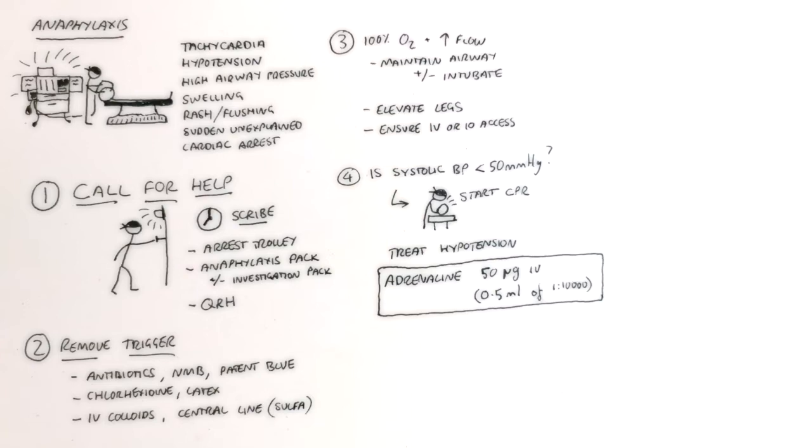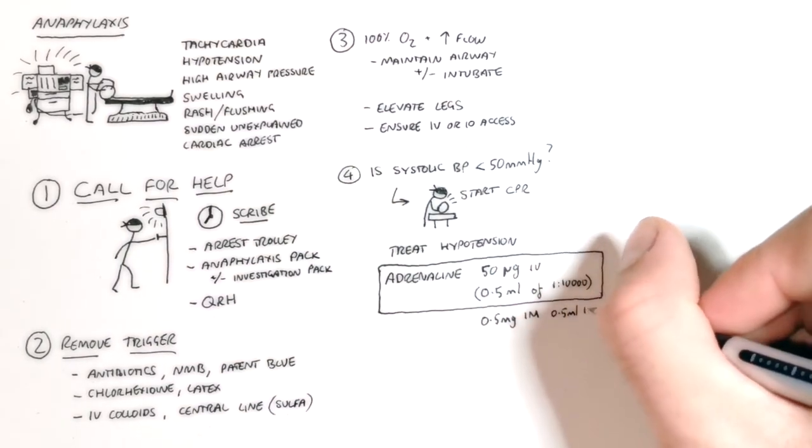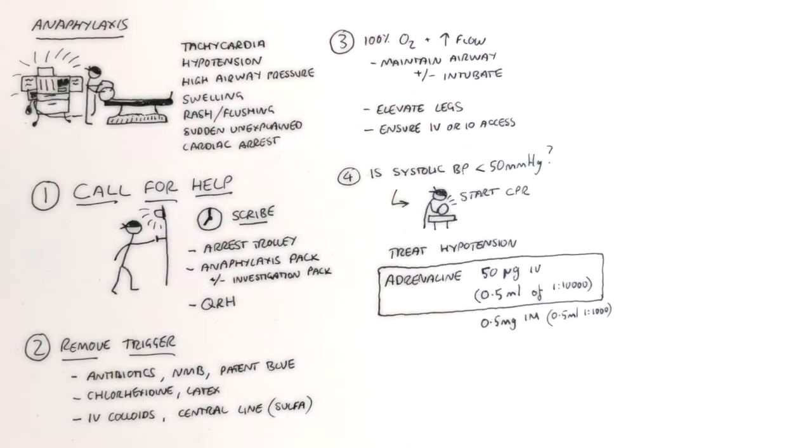If you don't have IV access, then the dose is 10 times this intramuscularly and you'll need half a mil of 1 milligram per mil adrenaline and this comes in little glass vials. In paediatrics, the dose is 1 microgram per kilo.